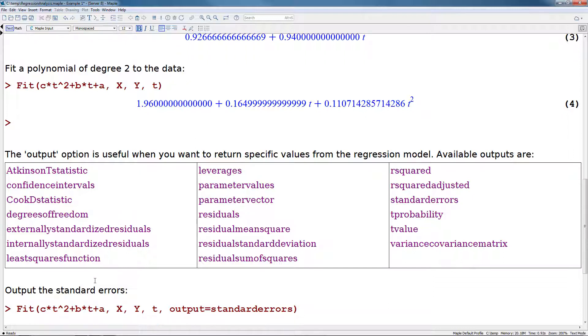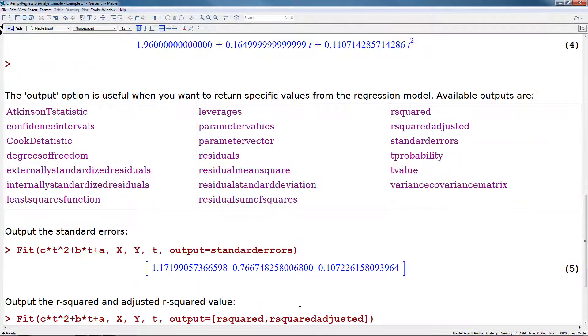For example, to return the standard errors from our fitted model, we'll continue to use this polynomial of degree 2. We do the fit command with the same information as before, but now we specify this argument output equals standard errors. This will give us back just the standard errors for this resulting model.